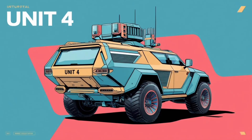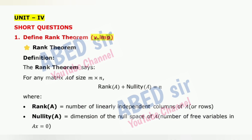Unit 4. First important short question: Define the Rank Theorem. The Rank Theorem states that for any matrix A of size m times n, rank(A) plus nullity(A) is equal to n. Here, rank(A) equals the number of linearly independent columns or rows of A. Nullity(A) equals the dimension of the null space of A, which is the number of free variables in AX = 0.